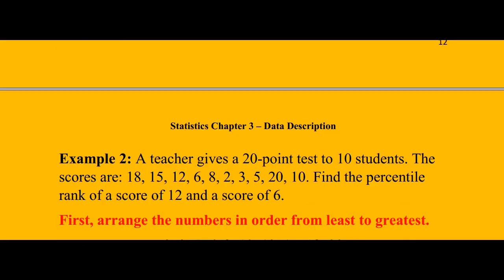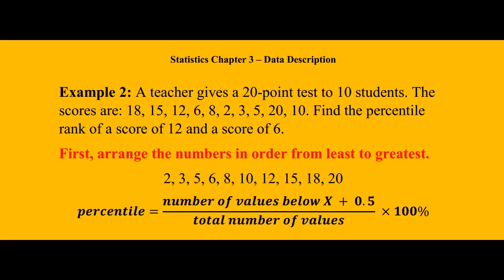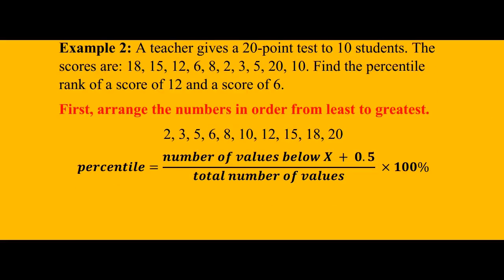Let's look at the problem. A teacher gives a 20-point test to 10 students. The scores are: 18, 15, 12, 6, 8, 2, 3, 5, 20, 10. Find the percentile rank of a score of 12 and a score of 6. So a student who got 12, how much did he do compared with the rest of the class? First of all, arrange the numbers in order from least to greatest. Whenever we are looking for measures of position, it is always helpful to arrange the numbers in order.